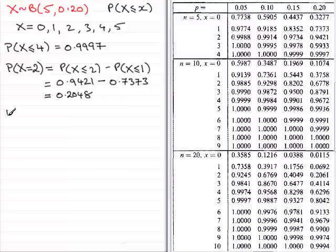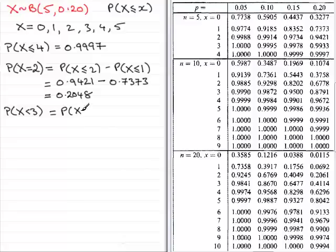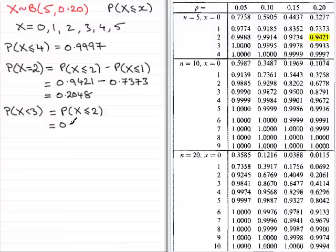Next, suppose we want the probability that X is less than 3. Since the tables only give less than or equal to, P(X < 3) is the same as P(X ≤ 2), because less than 3 includes only 0, 1, and 2. Looking that up in the tables again gives 0.9421.